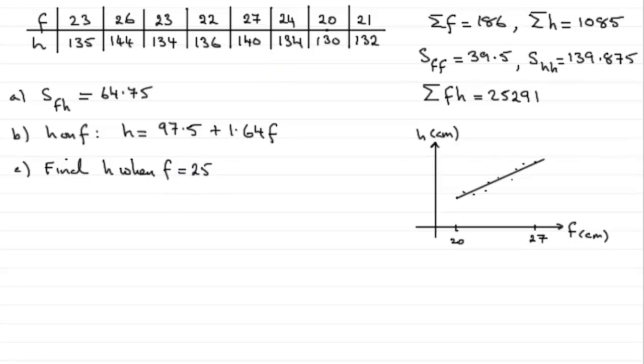And all that we're really doing then is substituting when F is 25 into our equation and finding out what the corresponding H value is there. So we just need to substitute 25 into here and get H. So we have H equals 97.5 then plus 1.64 multiplied by F when it's 25. And if you work that out, you'll find you get 138.5. So that'll be the height, 138.5 centimeters.